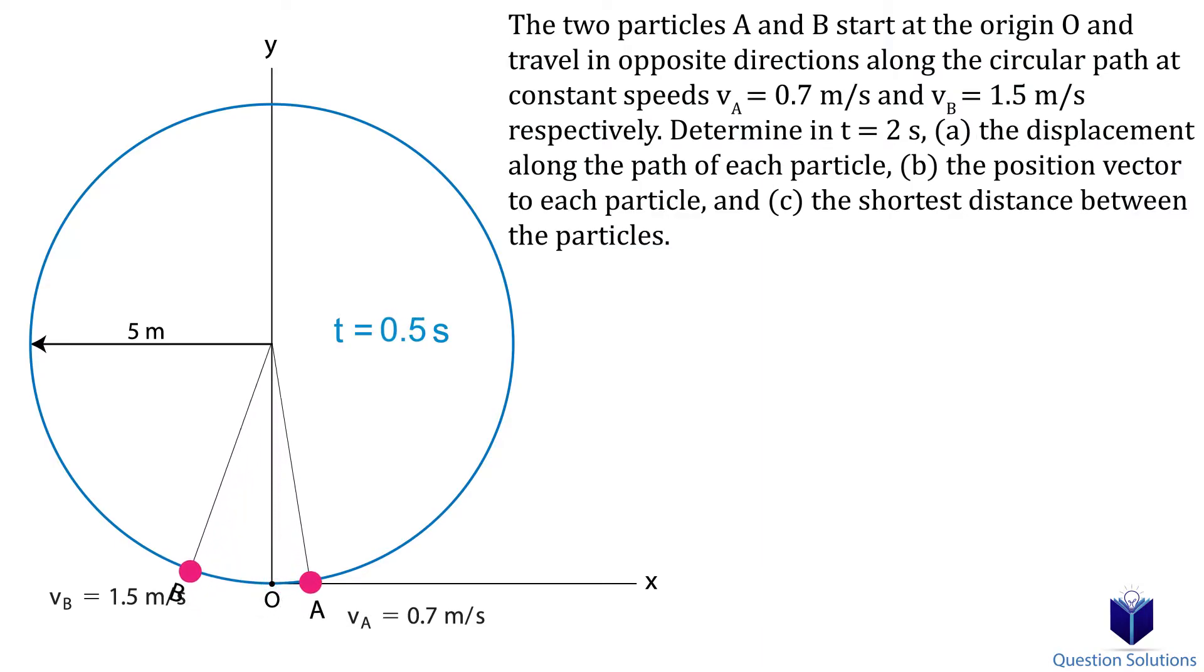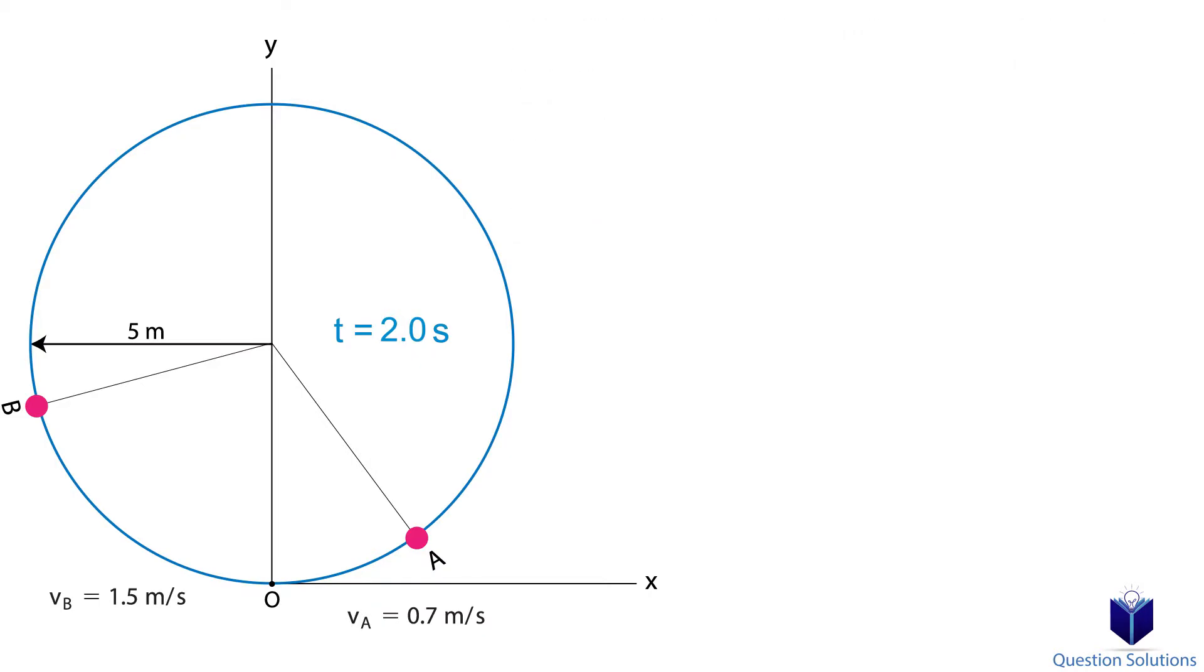In this problem, we need to figure out a bunch of things. So we will tackle them one by one. First, we need to find the displacement along the path for each particle at 2 seconds. That is easy to do.